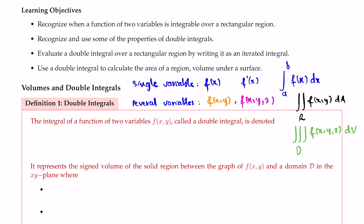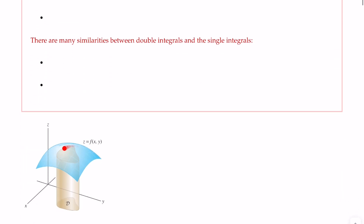In the first definition, the integral of a function of two variables f of x, y is called a double integral, denoted as the double integral of f of x, y. You evaluate this integral with respect to a cross-sectional area dA over domain D. It represents the signed volume of the solid region between the graph of f of x, y and the domain D in the x, y-plane, as shown in the figure. You have the function in blue and the domain of consideration on the x, y-plane, and you want to calculate the signed volume of the solid region bounded between the graph of the function and the domain D.